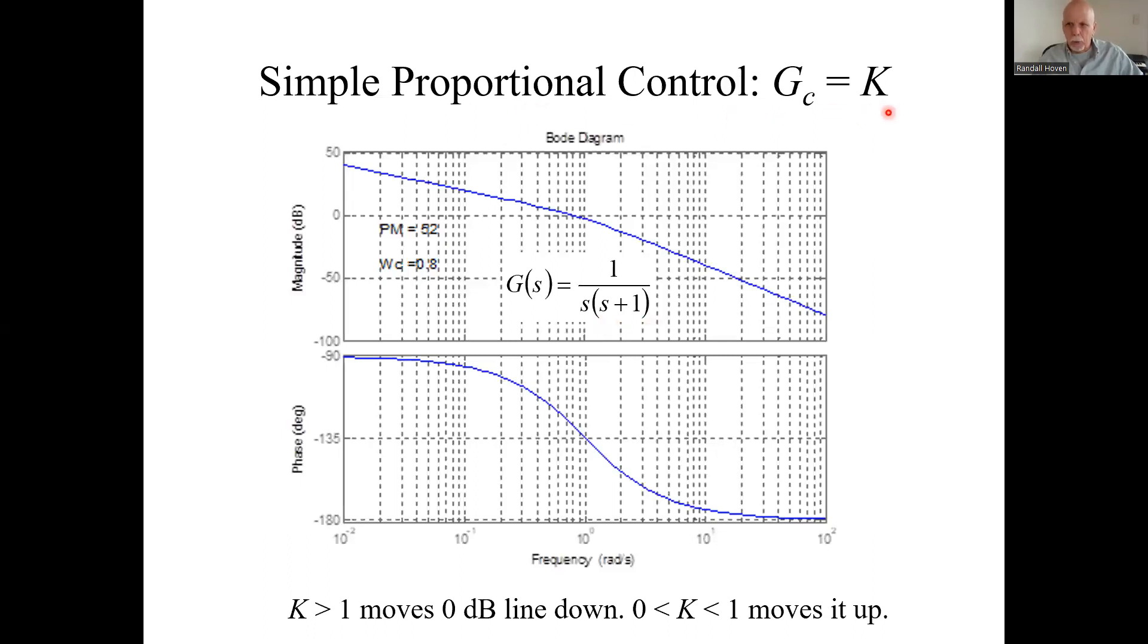If all we're going to do is proportional control, that controller is just a constant K. If K is greater than one, we move the reference line down. And if K is less than one, we move the reference line up. Reference line being the new zero dB line.